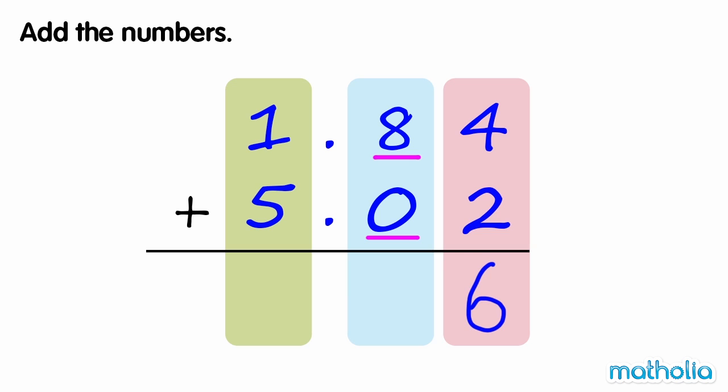Next, we add the tenths. 8 tenths plus 0 tenths equals 8 tenths. Remember to write the decimal point.